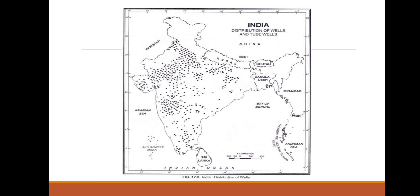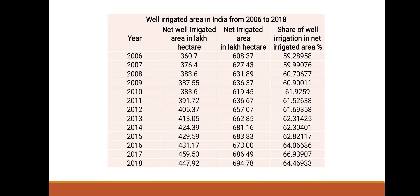This table shows the well-irrigated area in India from 2006 to 2018. When examining this table, in the year 2006, the share of well irrigation in net irrigated area is very low at 59.28958%. While during the year 2017, it has been very high at 66.93907%.